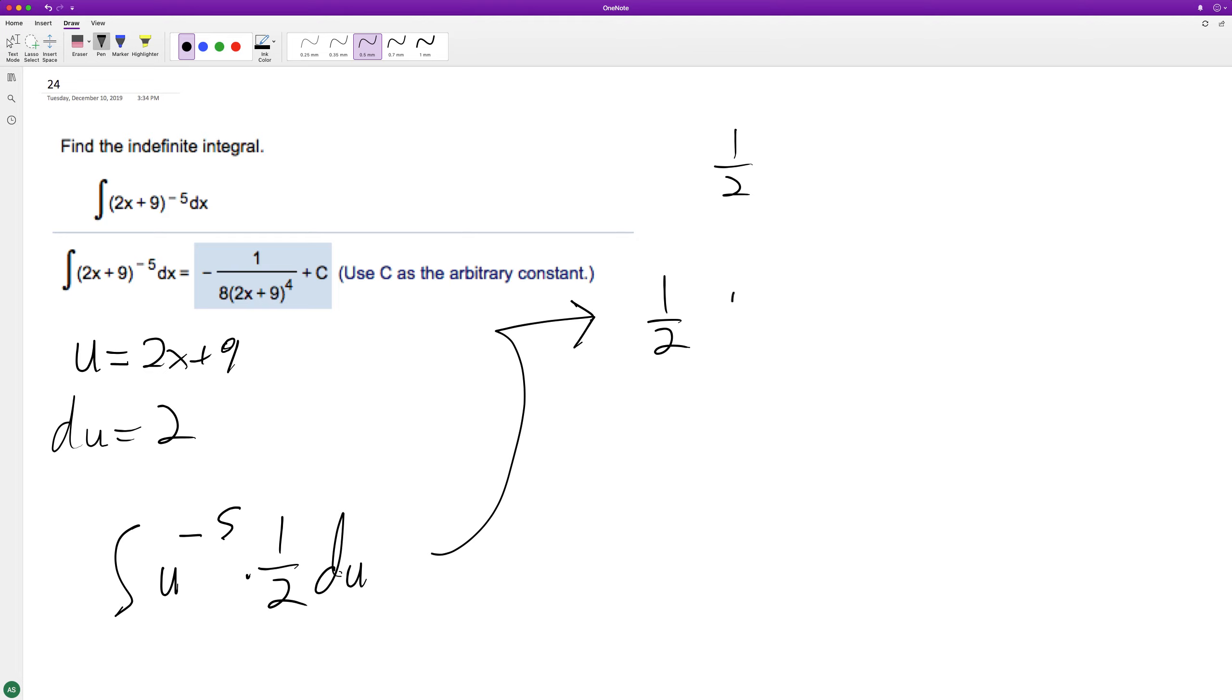The integral of u raised to the negative 5 is add 1 to both... add 1. Oops. So we end up with 1 half times u raised to the negative 4th over negative 4. So this is equal to negative 1 eighth.